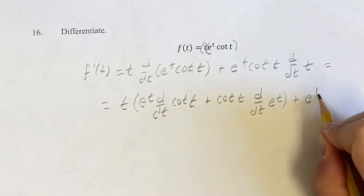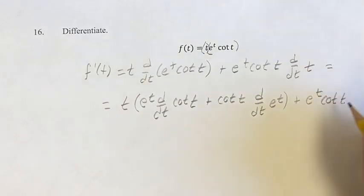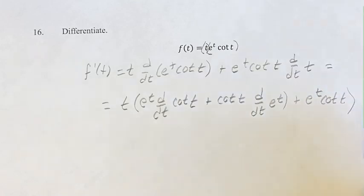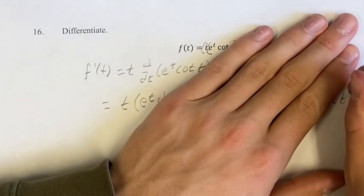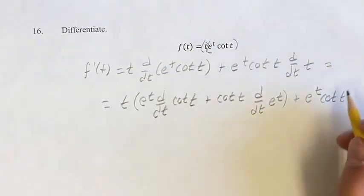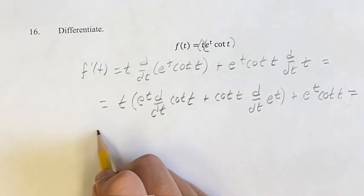This is plus e^t cot(t) times the derivative of t. t is just a linear term, so its derivative is its coefficient which is just 1. So it's e^t cot(t) times 1, which is itself.